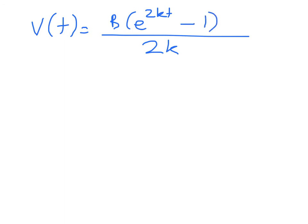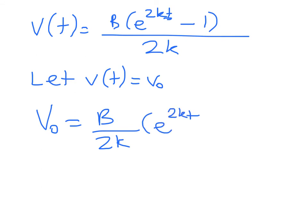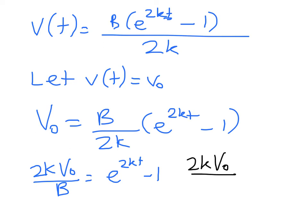Now we want to show how long it takes to reach any particular velocity. Let's work with that particular velocity v₀ and solve for t. We have v₀ = (B/2k)(e^(2kt) - 1). We're done with calculus, just algebra now. Cross-multiplying, we get 2kv₀/B = e^(2kt) - 1. Adding 1 to both sides, 2kv₀/B + 1 = e^(2kt).